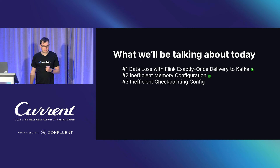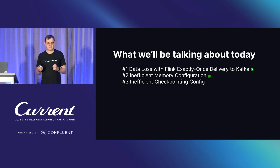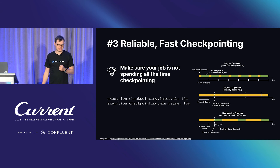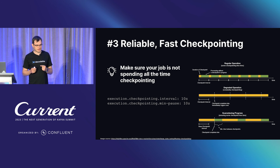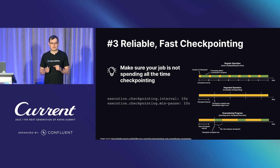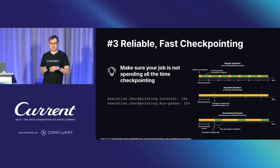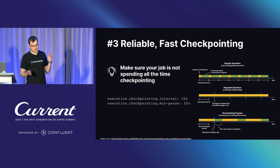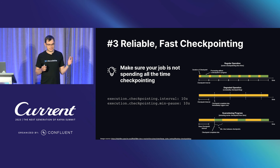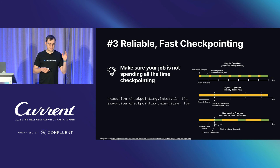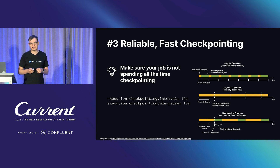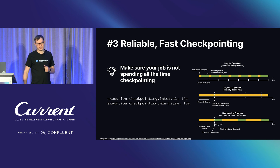Next, let's talk about checkpointing configuration — another area where you can get a lot more out of your Flink cluster. Make sure your job is not spending all its time checkpointing. There's a useful configuration parameter called min pause between checkpoints. With it, you can guarantee your Flink job spends at least that minimum pause doing actual work instead of creating checkpoints. If you trigger a checkpoint every 10 seconds but a checkpoint takes 12 seconds, you'll basically always have a checkpoint running. With the min pause configuration, you checkpoint for 12 seconds, process for 5-10 seconds, then checkpoint again — giving you better overall performance.